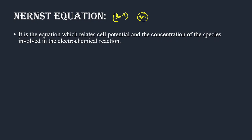It is the equation which relates the cell potential and the concentration of the species involved in an electrochemical reaction. One electrochemical reaction involves EMF. It is an electrochemical reaction with a reactant and product — that is the species. So this is a concentration of reactant and product, and EMF is related by an equation.